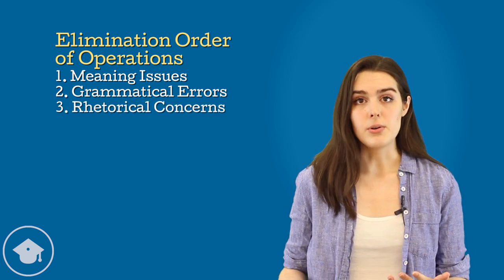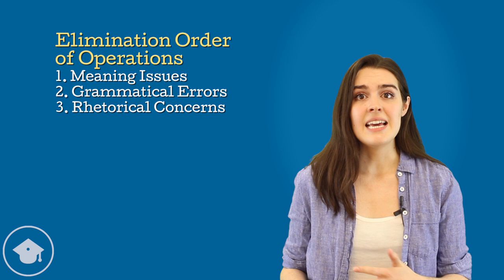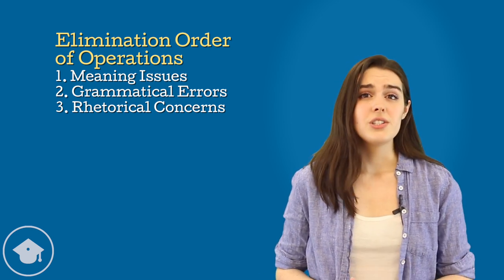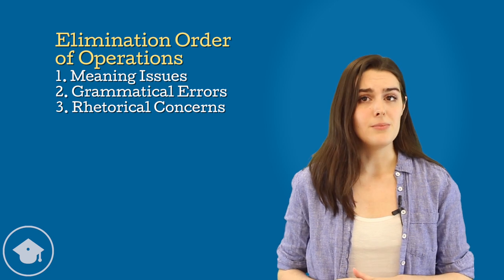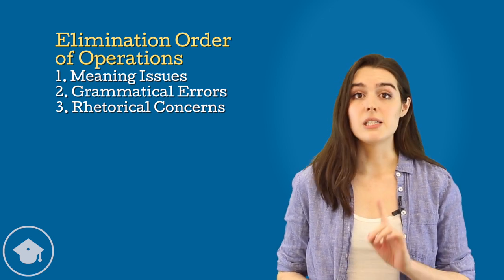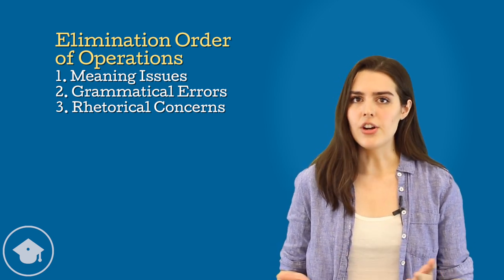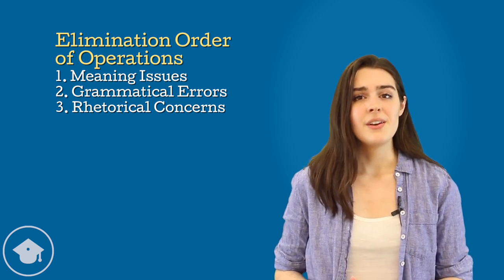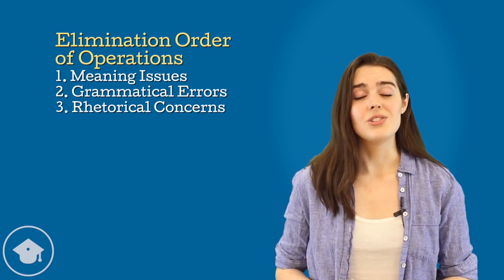So if, for example, you see right away that answer choice E is less concise, hold off on eliminating it. If answer choices A through D have more important problems, E will be the correct answer despite its length. However, if there is another answer choice that doesn't have meaning or grammar issues, you may be able to use the rhetorical issues in E to eliminate.